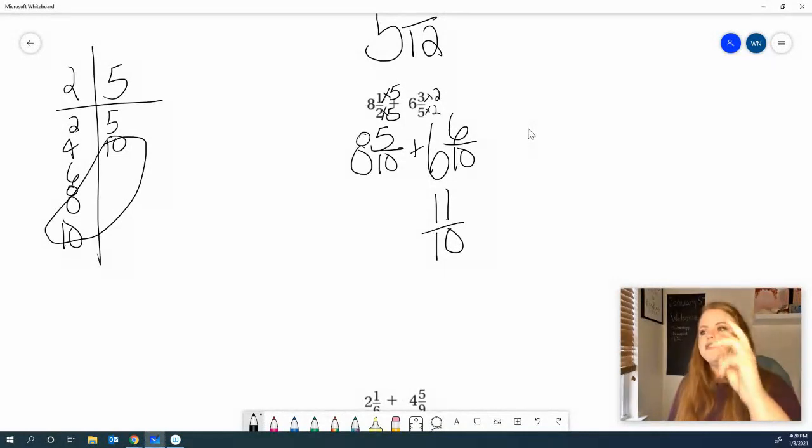Let's add those up. 5 plus 6 is 11. Keep your denominator the same. 8 plus 6, 9, 10, 11, 12, 13, 14.